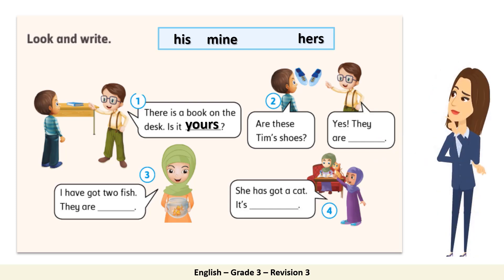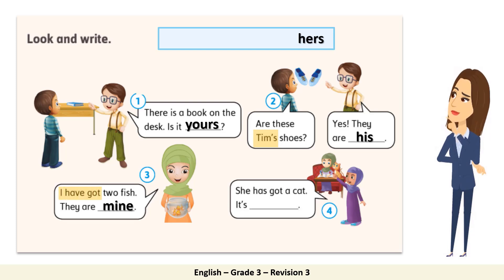Let's check your answers. Number two: Are these Tim's shoes? Yes, they are his — because they are talking about Tim. Number three: I have got two fish. They are mine — because she said 'I have got'. Number four: She has got a cat. It's hers — because she is talking about a girl and said 'she has got'. Well done, everyone.